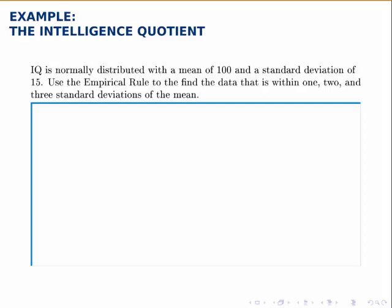IQ scores are normally distributed with a mean of 100 and a standard deviation of 15. Here we're asked to use the empirical rule to find the data that is within 1, 2, and 3 standard deviations of the mean.